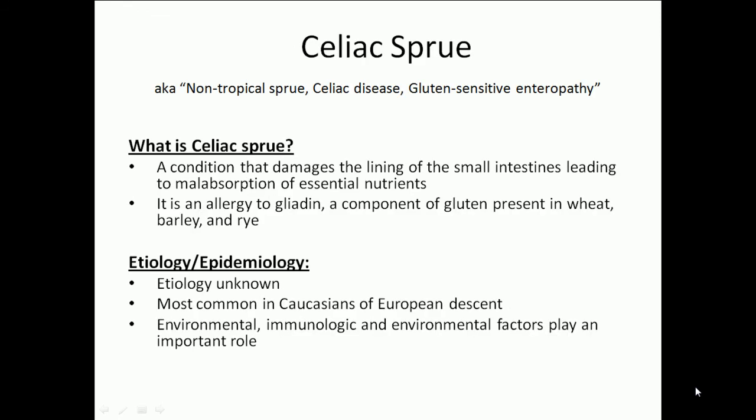Now let's talk about celiac sprue. It's a condition that damages the lining of the small intestines, leading to malabsorption of essential nutrients. It's an allergy to gliadin, a component of gluten present in wheat, barley, and rye. The etiology is unknown, and it is most common in Caucasians of European descent. Environmental and immunologic factors play an important role.